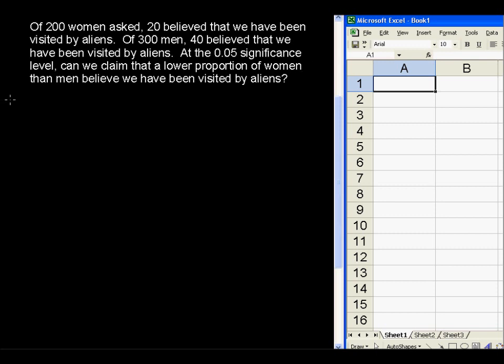This will be a hypothesis test comparing two proportions. Let's set up our null, H₀, and our alternative H₁ hypotheses. We're testing if the proportion of women, p_w, is less than the proportion for men.